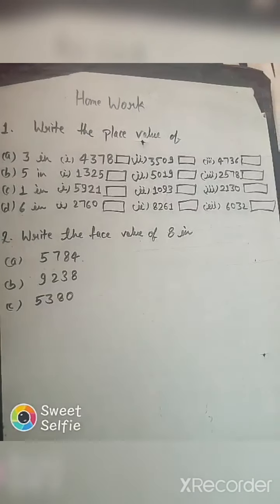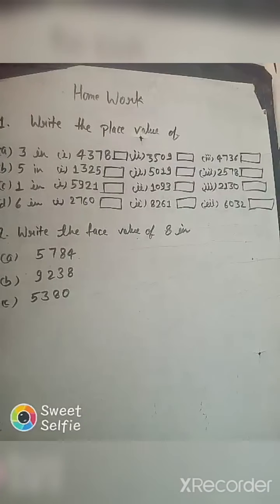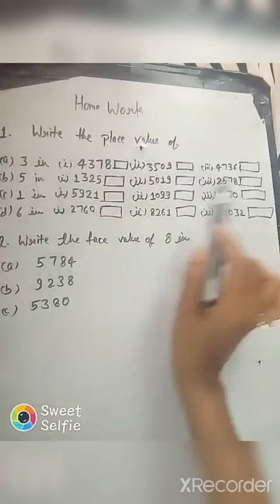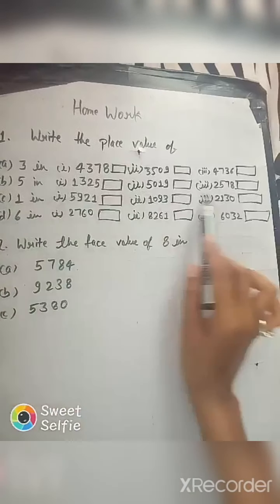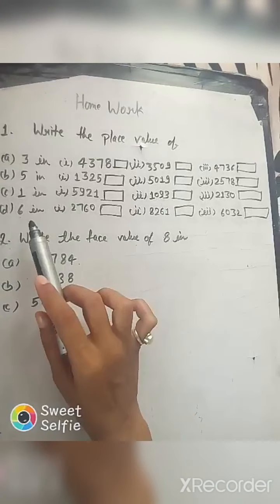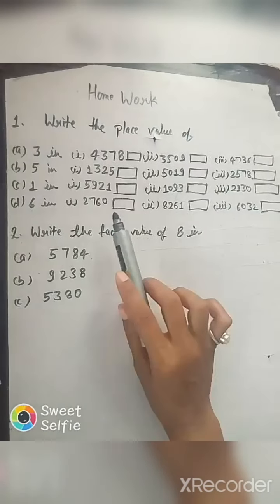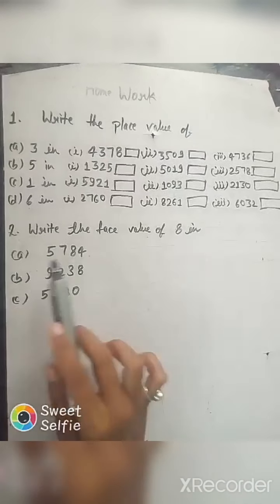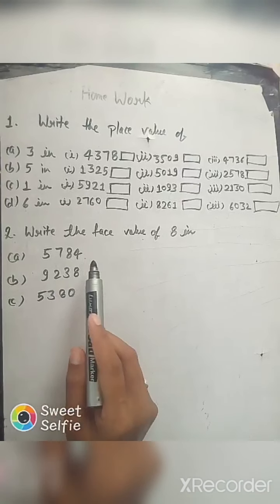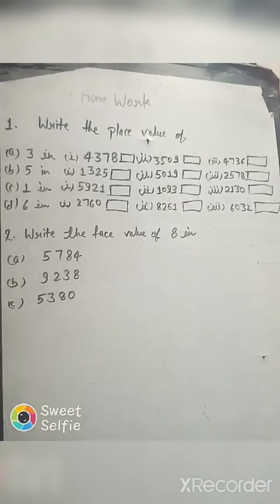Now for your homework: Question 1 — write the place value of the following digits: (a) 3 in three given numerals, (b) 5 in all three numerals, (c) 1 in all three numerals. Question 2 — write the face value of 8 in the numbers 5784, 9230, and 5380.